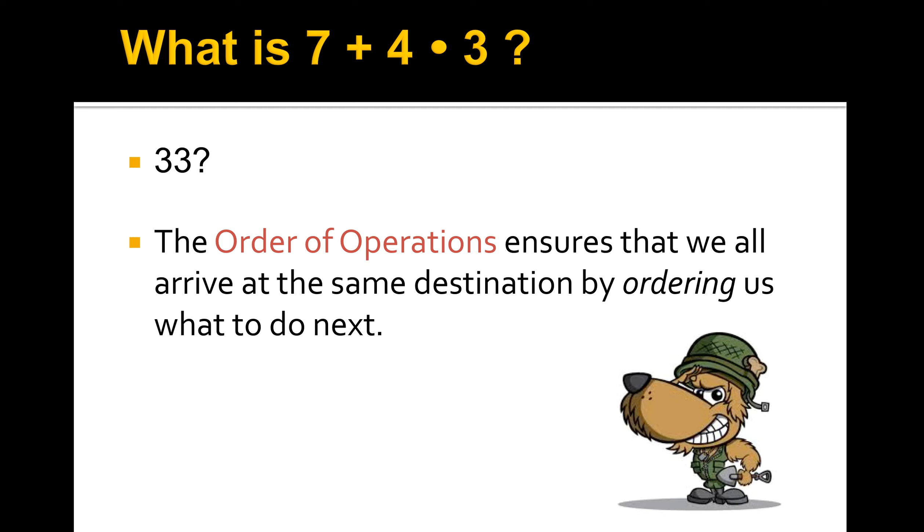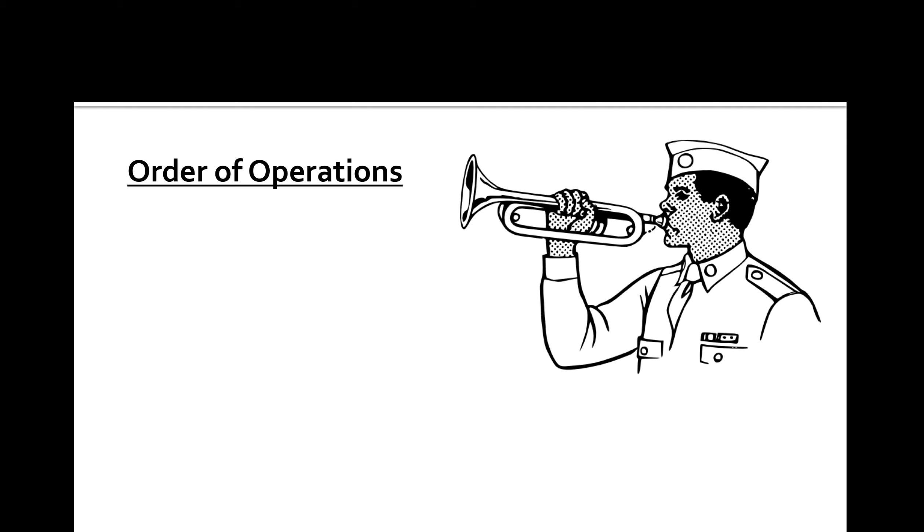So coming up we're going to look at some examples in which we follow orders and arrive at the right answer. Our order of operations tells us first we have to do all the parentheses, so anything that's in parentheses we need to resolve that first. Next we're going to take care of any exponents or roots—square roots, cube roots, etc. After that we're going to do multiplication and division left to right.